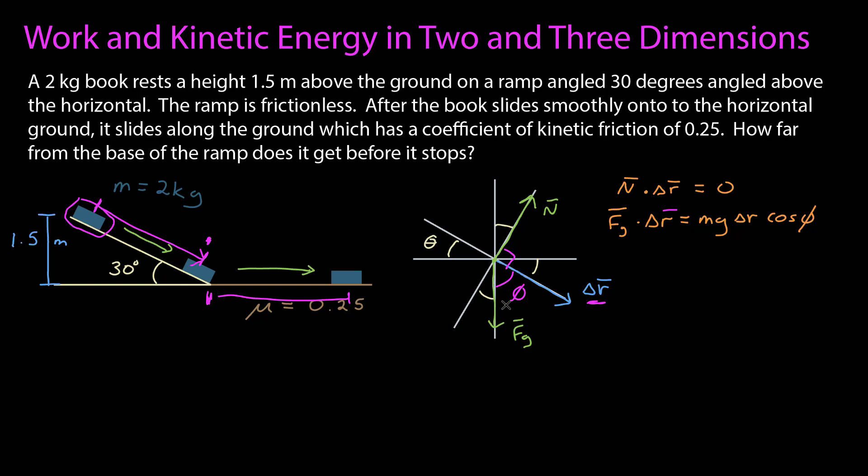I know that it's 90 minus the original angle I had. So when it comes time, I can tell that it's 60 degrees. But at the moment, I'll just leave it as phi. Delta r, of course, is the displacement down the incline. And I don't know that number. I do know the height that it starts at, which is 1.5 meters.